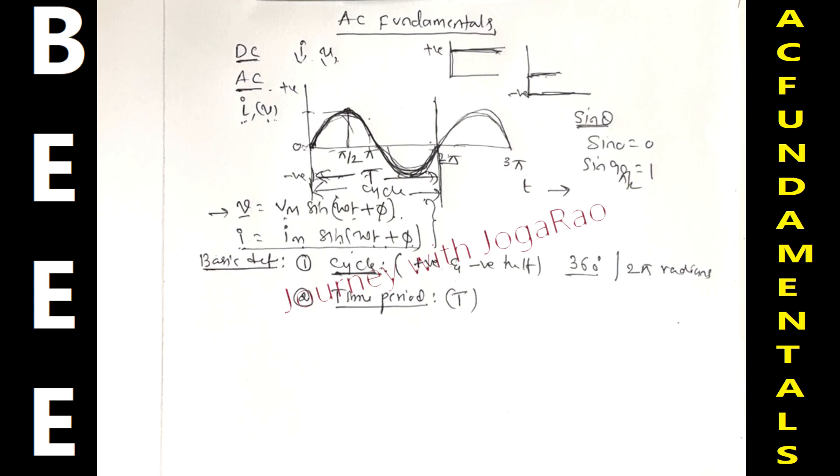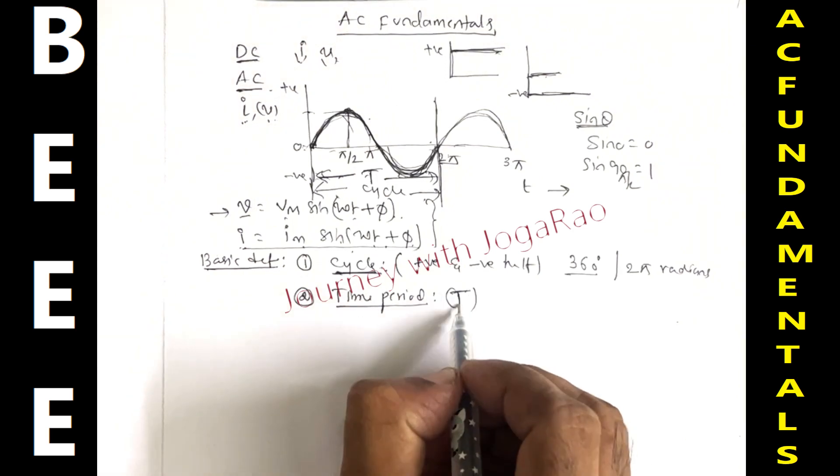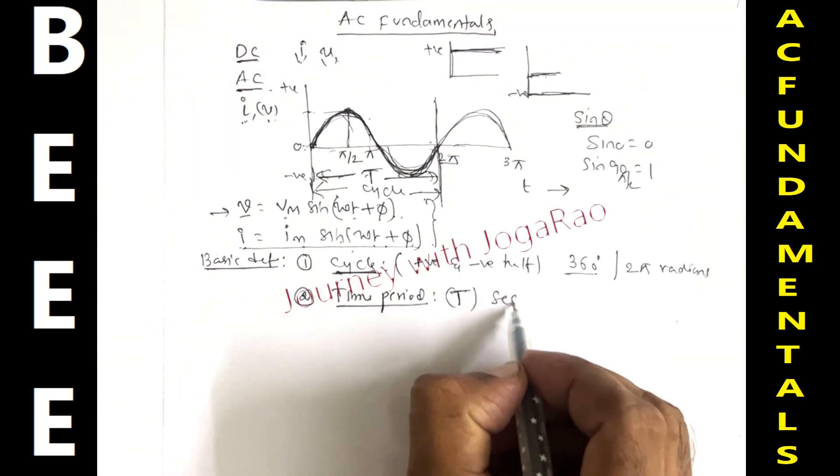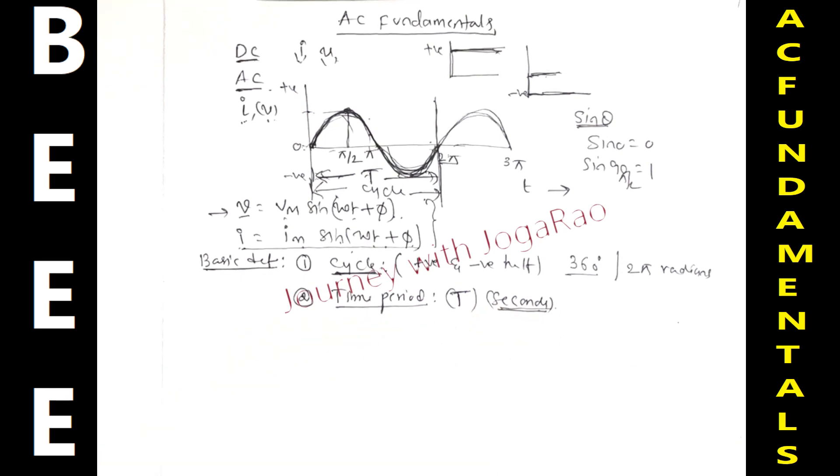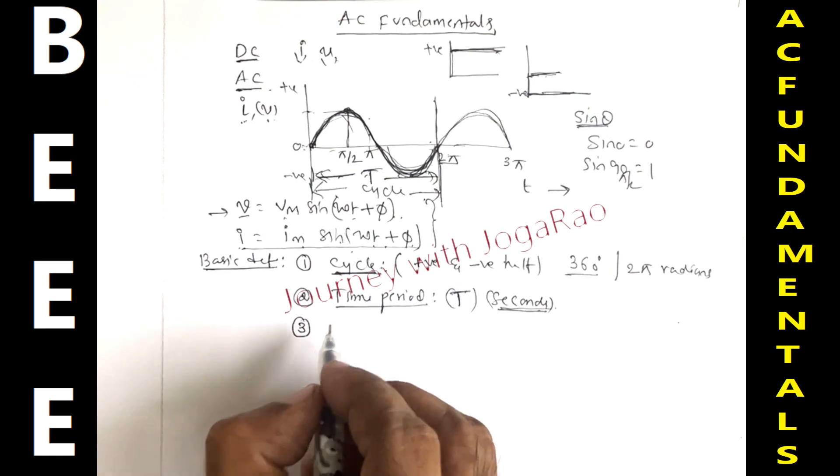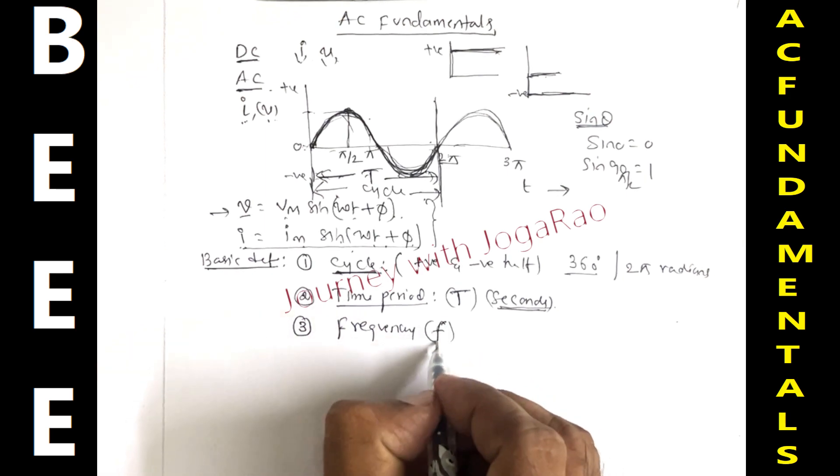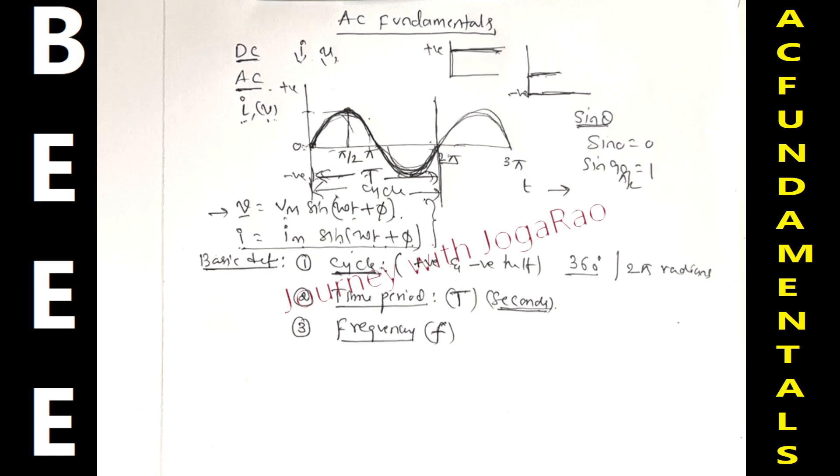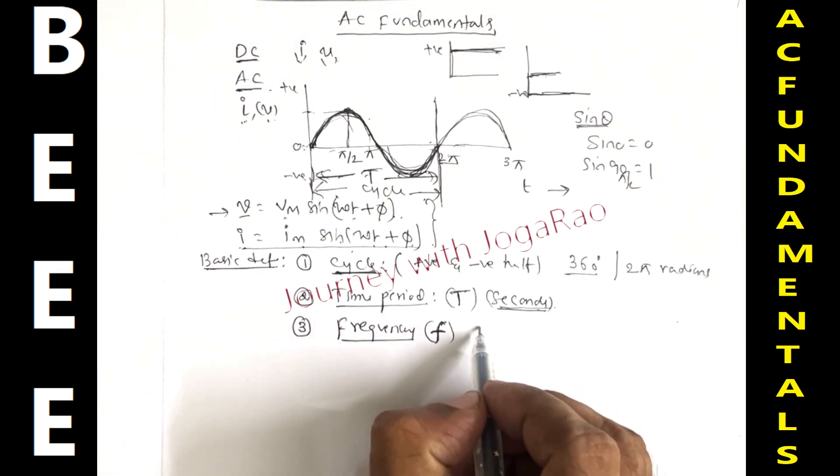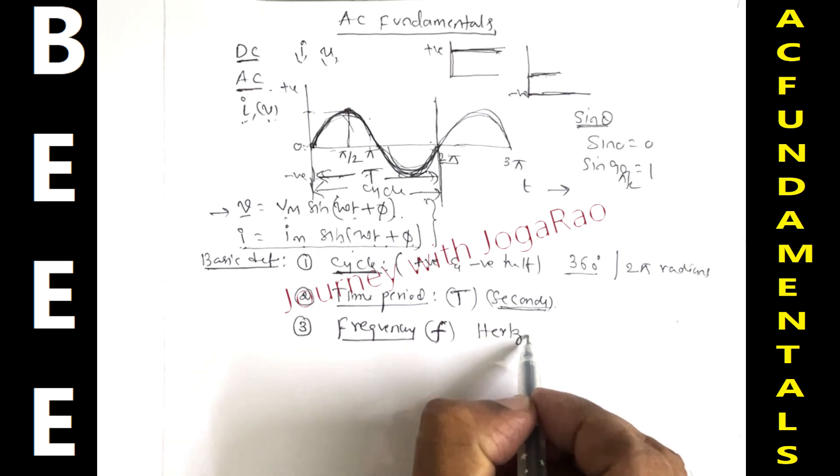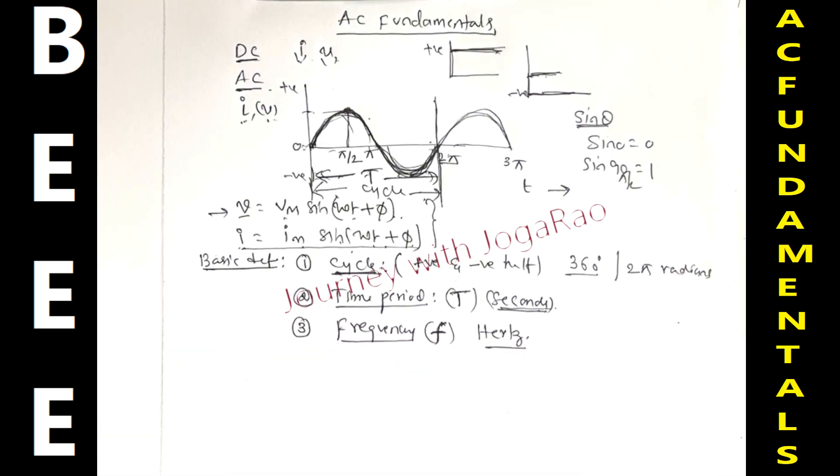It is generally denoted by capital T, time period, which is measured in seconds. Next important definition, number three: frequency f, indicated by small f. The number of cycles completed by an alternating quantity in one second is called frequency. It is denoted by f and its unit is hertz.